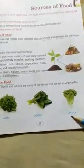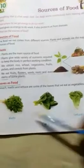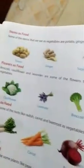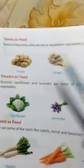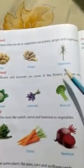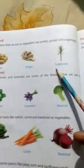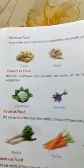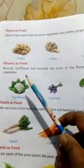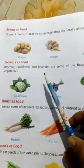Leaves as food — for example, methi, spinach, and lotus leaves. These are leaves that we eat. Next, the stem as food — potato, ginger, and sugarcane are examples of stems used as food.